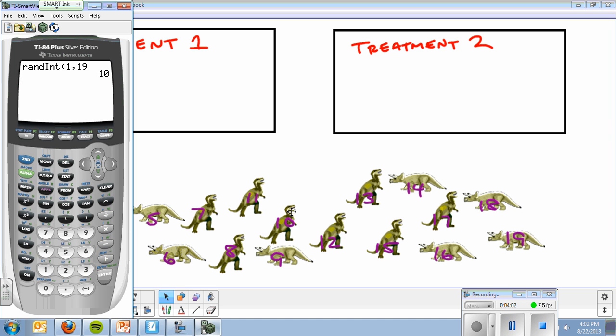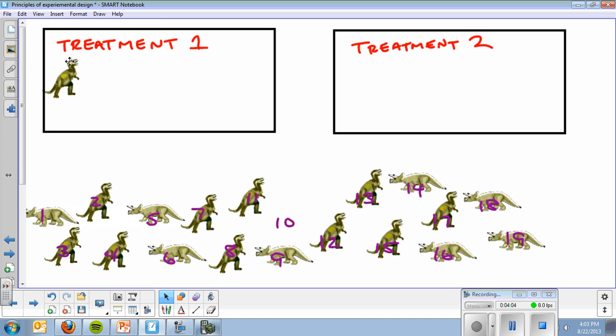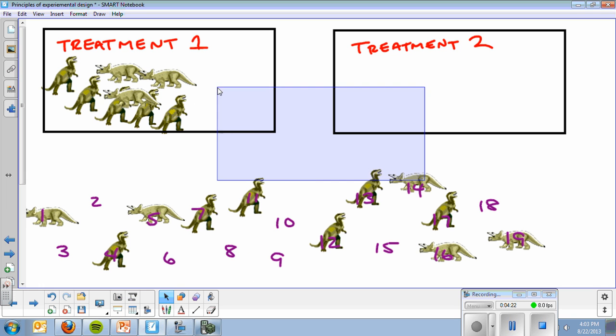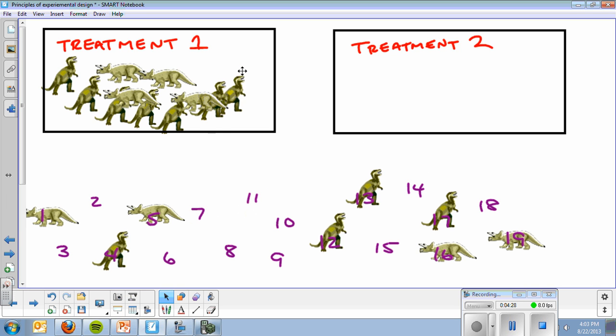So I go over here. The dinosaur that was numbered 10, he's going to go to treatment 1. I repeat that process until I have 10 volunteers for my first treatment: 1, 2, 3, 4, 5, 6, 7, 8, 9, 10.